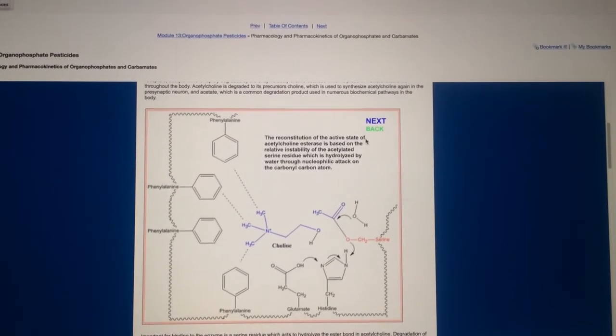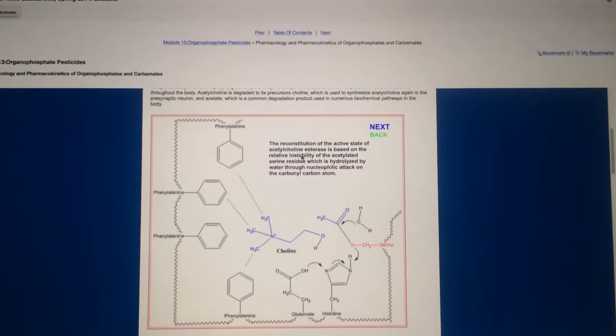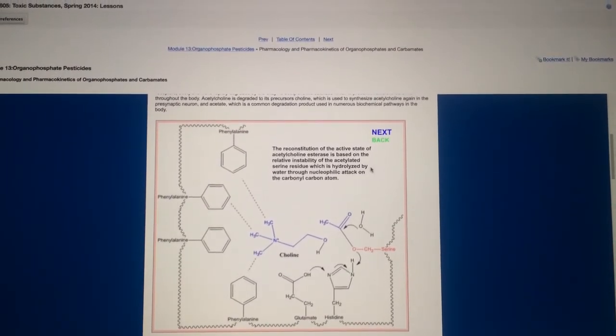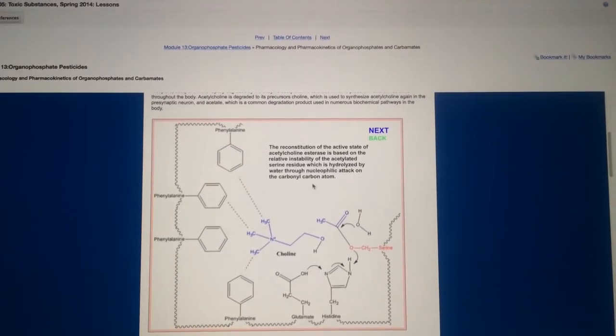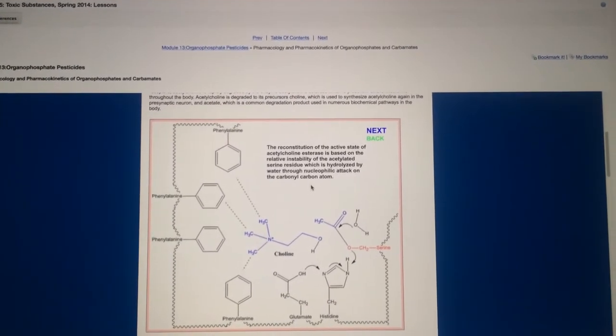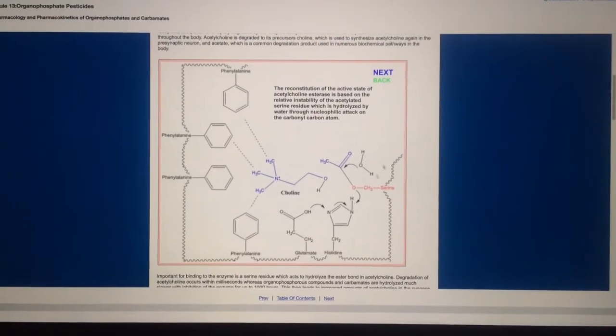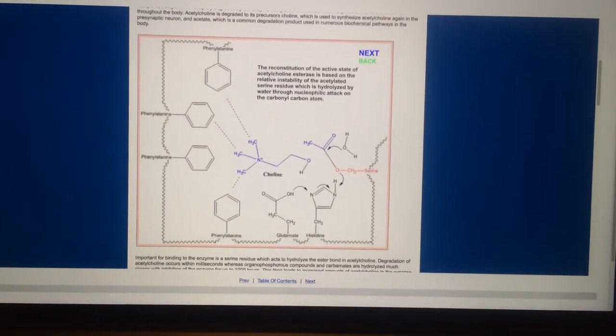The reconstitution of active state of acetylcholinesterase is based on the relative instability of acetylated serine residue, which is hydrolyzed through nucleophilic attack on the carbonyl carbon atom. So basically what this is talking about here is talking about water coming in and how this thing can reset.